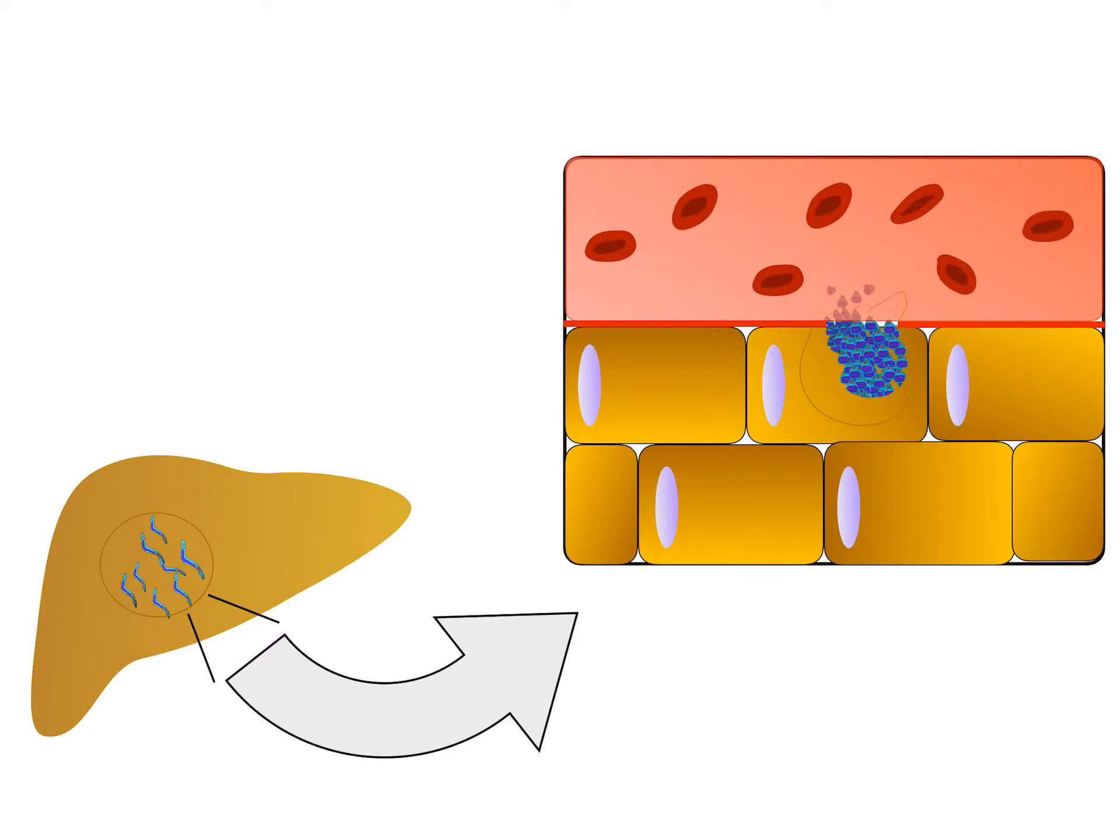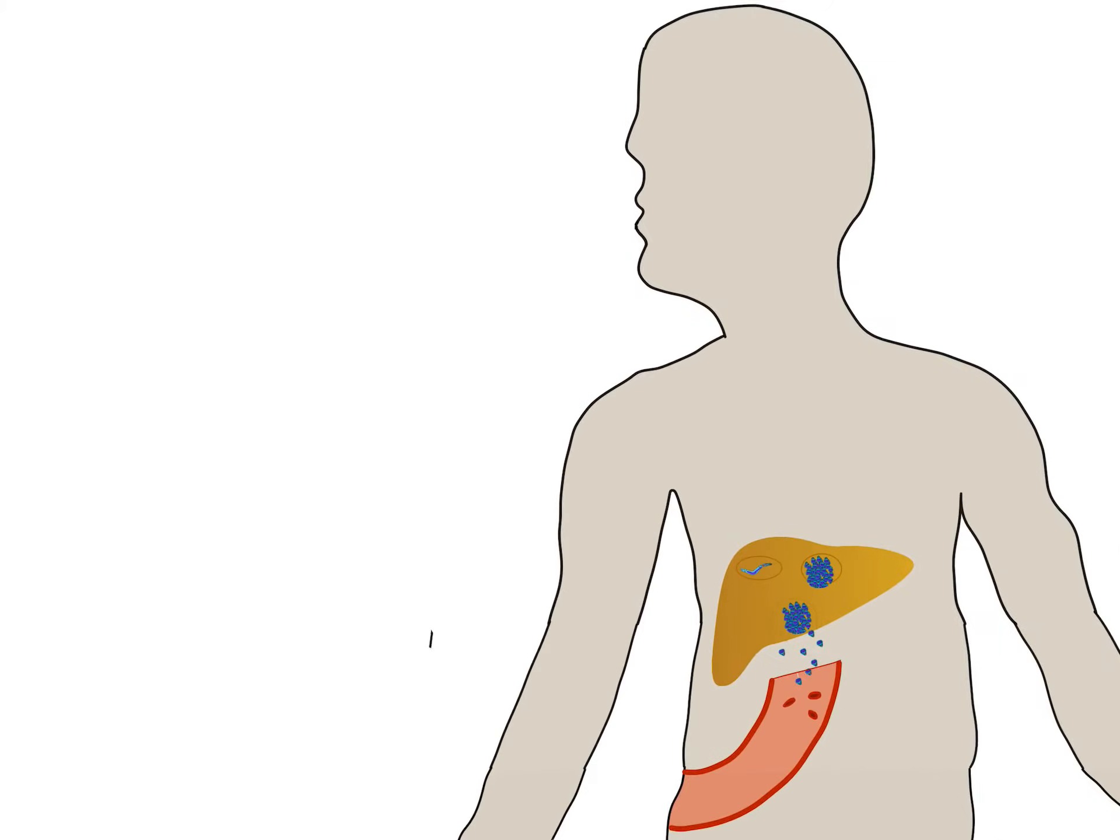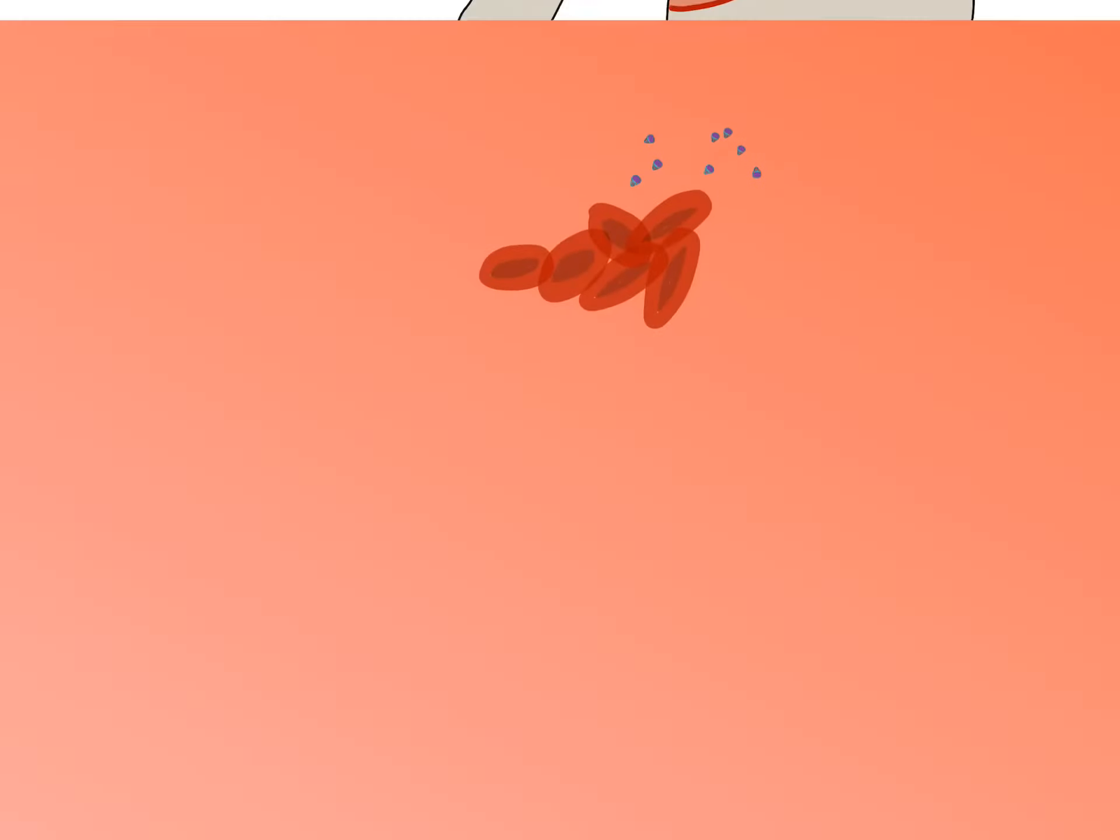Once the schizont ruptures, merozoites are released from liver cells. They attach and penetrate erythrocytes. After gaining entry into erythrocytes, Plasmodium begins to enlarge, resulting in immature trophozoite called ring stage, which then develops into mature uninucleate trophozoite.